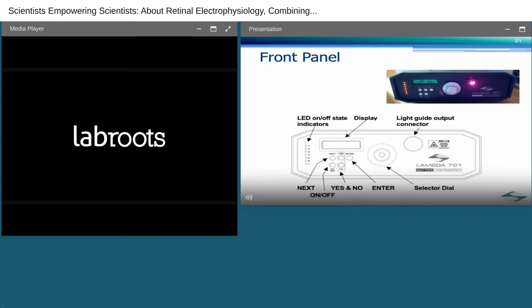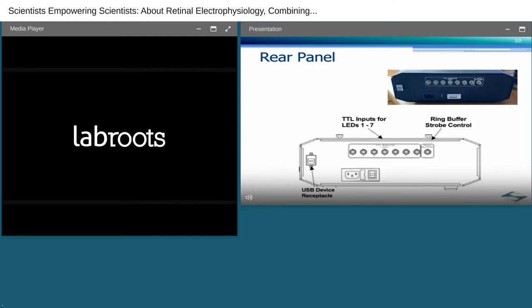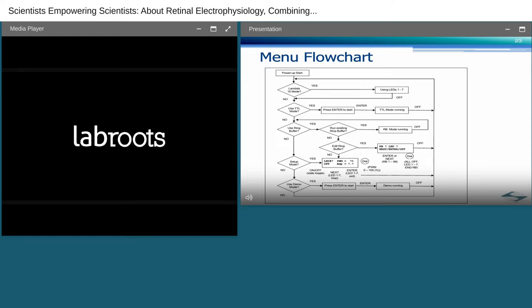Loosen the lock down screw and slide the light guide in and out until the circle on the wall has sharp edges and is uniform, as shown in these images. Tighten the lock down screw, power off the 721 and install the adapter onto the microscope. Now that we have the hardware properly connected, let's review the front and rear panel controls. There are only a few controls that you will need to get acquainted with on the front panel. On the left hand side, we have the LED on-off state indicators, which are extremely useful, especially when testing. To the right of that is a display which shows the menu selections and device status, followed by controls for traversing and selecting the various menu choices located on the right and below the display. Finally, the light output port.